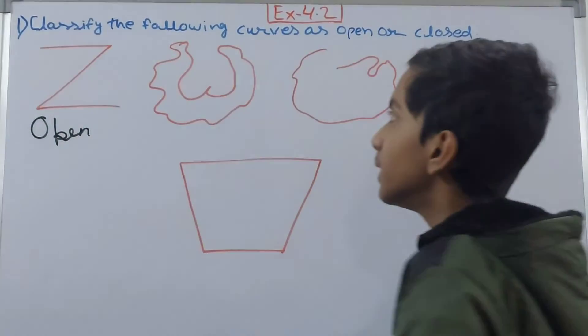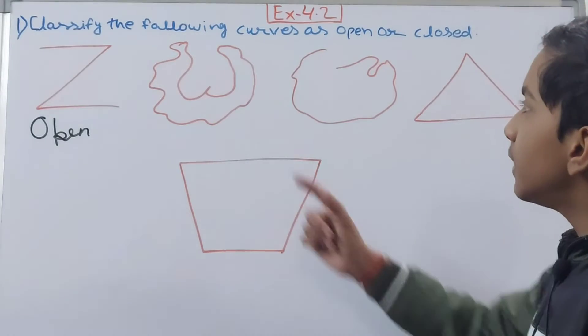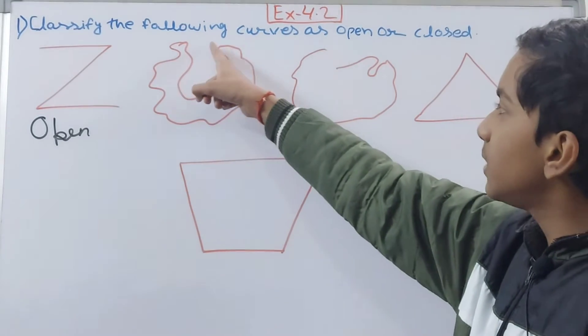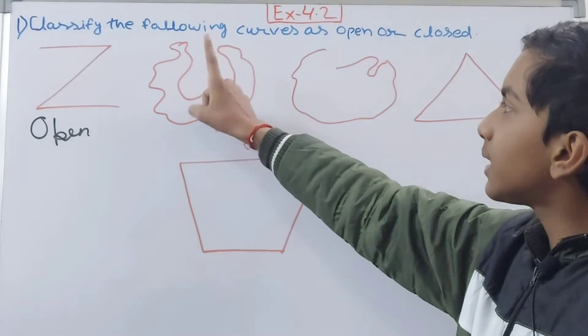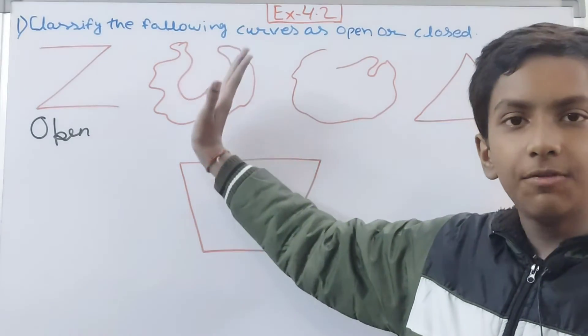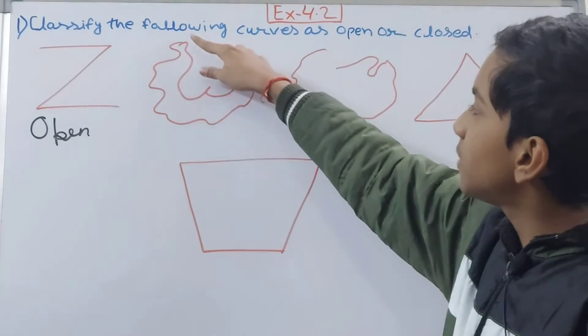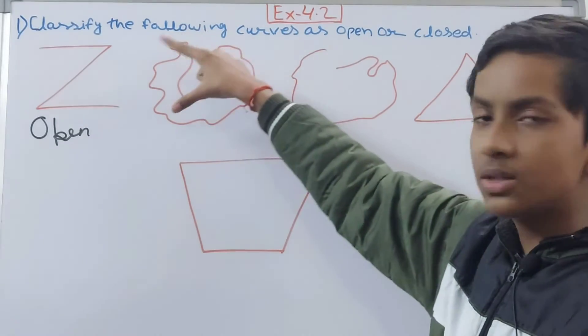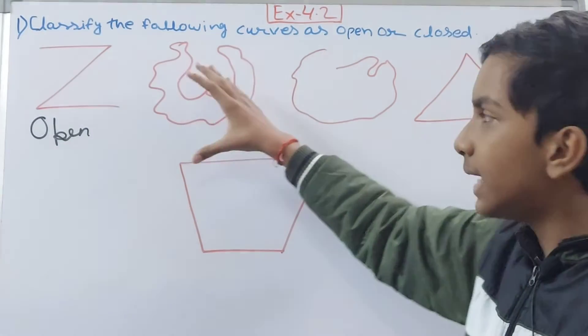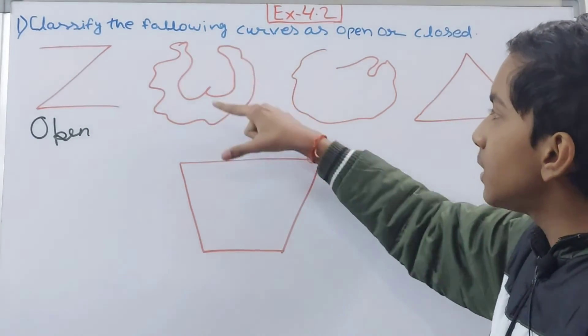Then this one. Now in this, if you see, you might think from here the boundary is open, but you don't have to look at that. The figure is in a different shape, from here to here. So it is closing an area—it has enclosed the area and the boundary is also completely closed. So that means this is a closed curve.